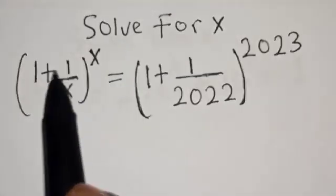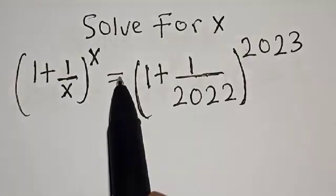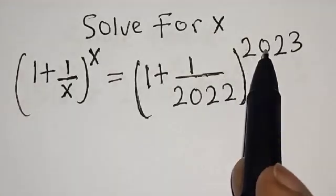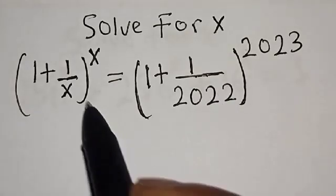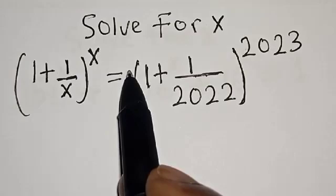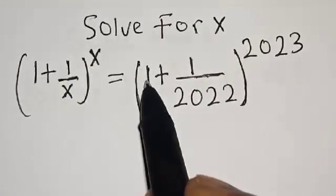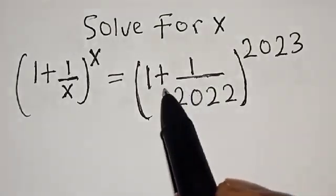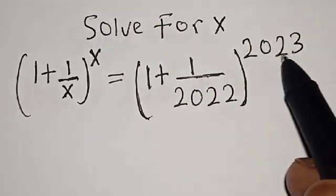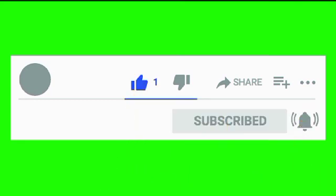Solve for x: (1 + 1/x)^x = (1 + 1/2022)^2023. Hi everyone, welcome to my class. In this class we want to find the value of x from this given equation: (1 + 1/x)^x = (1 + 1/2022)^2023. But before we proceed, please don't forget to like, share, comment, and subscribe.